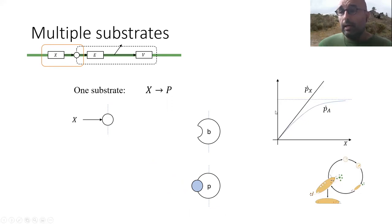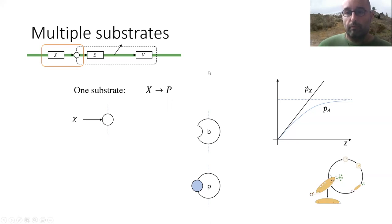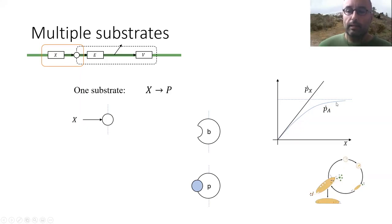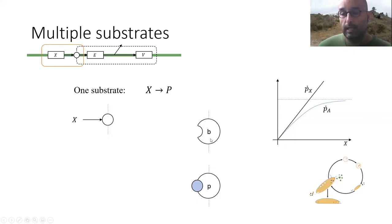We can compute the flux of processed product, which in this case is equivalent to the assimilation flux for food X. The more X available, the incoming flux of X increases linearly, but the assimilation flux increases to a maximum regulated by the processing time of the SU. This is the simple single-substrate case that has also been seen in the DEBex MOOC.